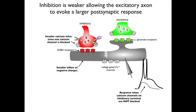In other words, although the endocannabinoids did not change the strength of the excitatory synapse, they did weaken inhibition. And by so doing, the endocannabinoids acted to strengthen the response evoked by the entire circuit.